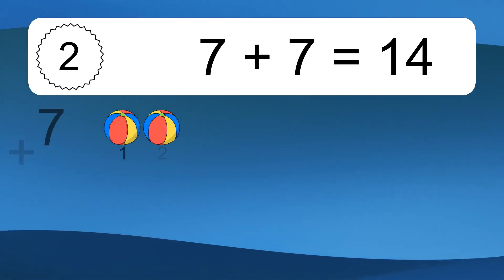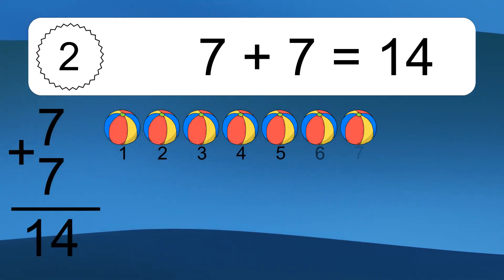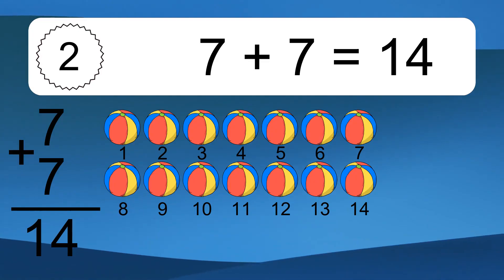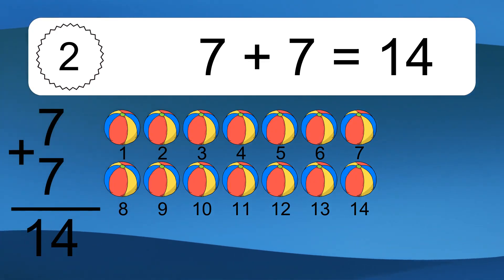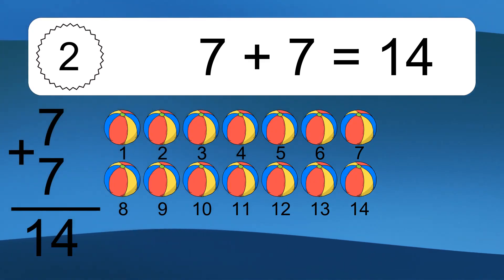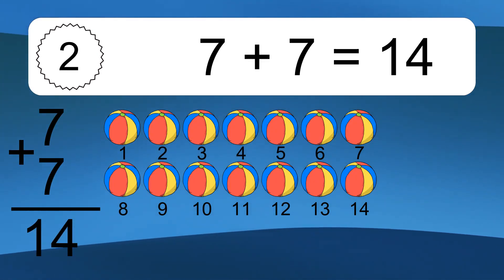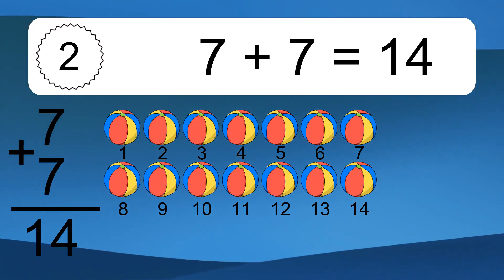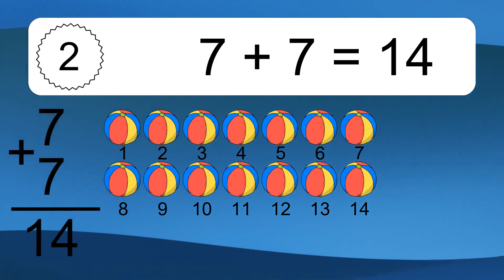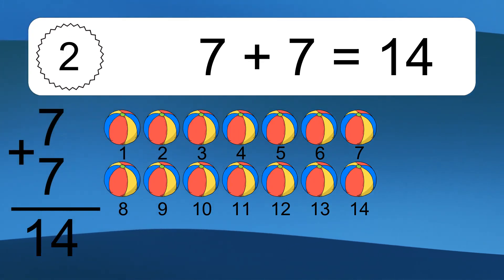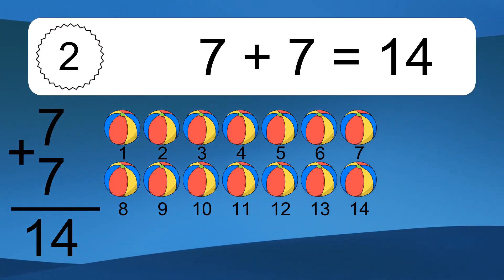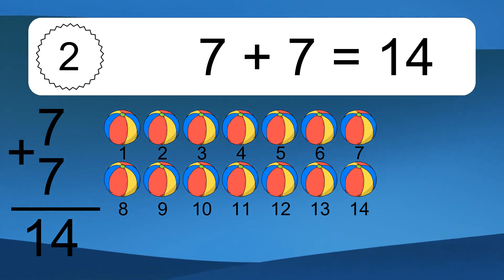7 plus 7 equals 14. Let's count it. 1, 2, 3, 4, 5, 6, 7, 8, 9, 10, 11, 12, 13, 14.